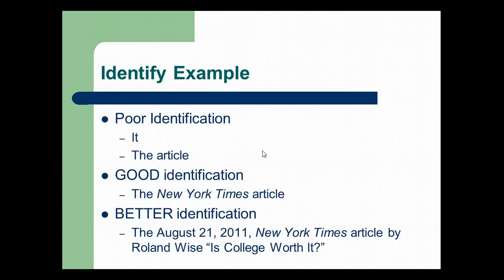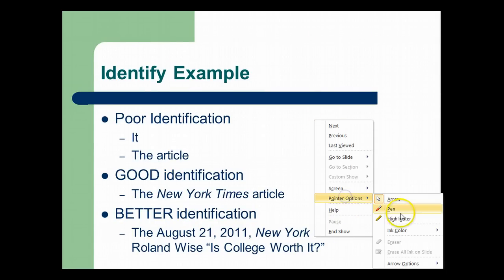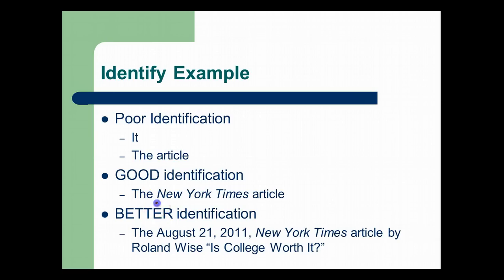Let's take a look at some examples of identifying statements. Poor identification is when students begin sentences with 'it was interesting.' Well, what do you mean by 'it'? 'The article was interesting' — well, there's millions of articles written. Which article? A better identification might be 'The New York Times article,' which is a little better because if we had read a New York Times article in class, I as your reader might understand what you're referring to.